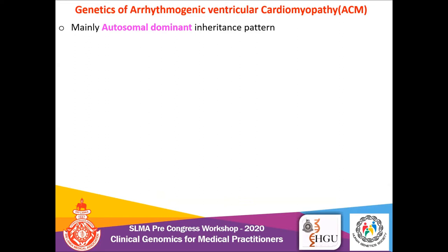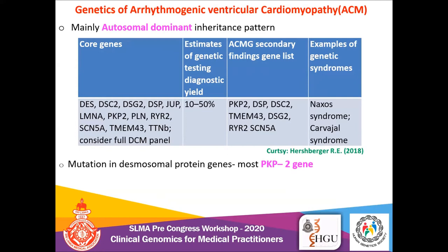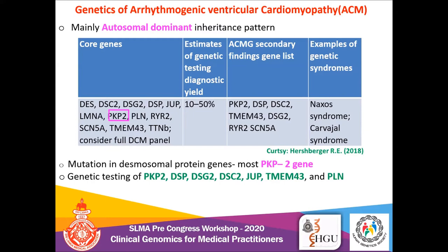In arrhythmogenic ventricular cardiomyopathy, predominantly the autosomal dominant inheritance pattern is observed. This condition is caused by mutation in one of the genes encoding desmosomal proteins. The most common is plakophilin-2, or the PKP2 gene, highlighted here. The slide lists important genes for screening, and recent evidence suggests that genetic testing of selected genes, highlighted in green, can identify about 63% of cases with arrhythmogenic ventricular cardiomyopathy.